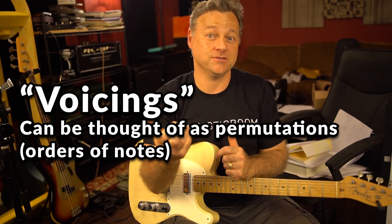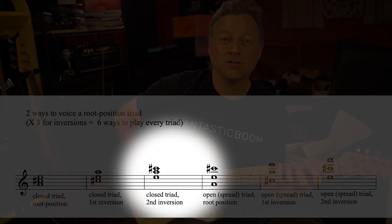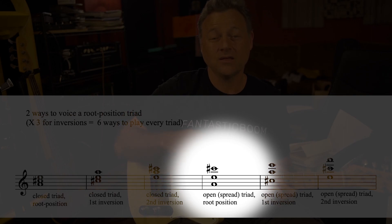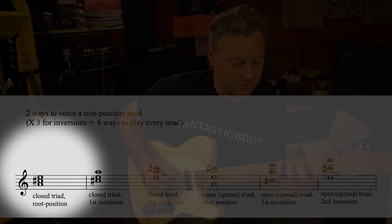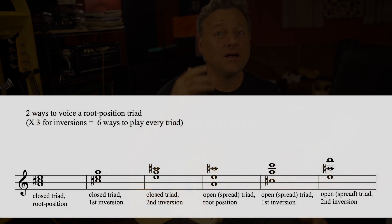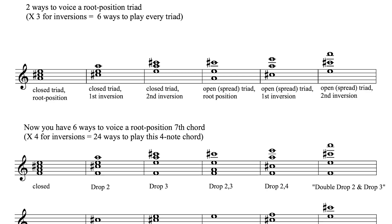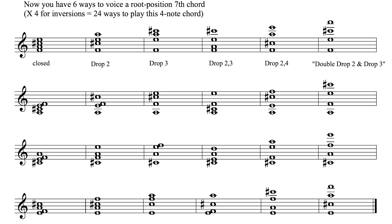If you want to discuss voicings, that's where permutations come back into play. For triads, you can go 1-3-5 (closed position) or 1-5-3 (spread or open triad), giving six possible ways to voice a triad across three inversions. Applying those six voicing arrangements to the three notes above the root in four-note chords — 1-3-5-7, 1-5-7-3, 1-7-3-5, and so on — across four inversions each gives you 24 possible ways to voice a four-note chord. These voicings have names such as closed position, drop two, drop three, and so on.